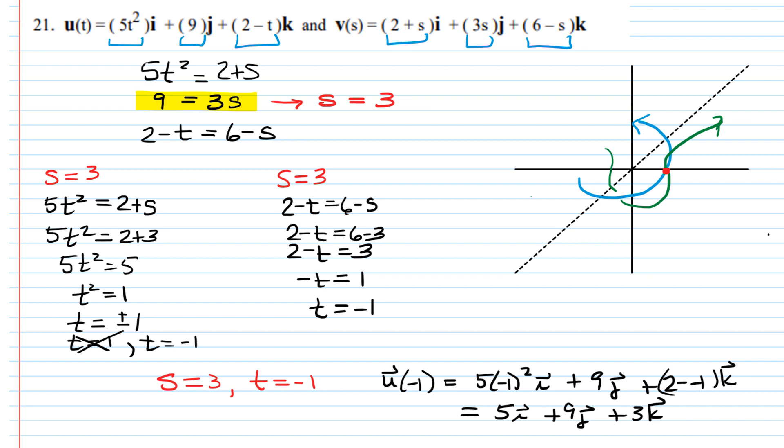And you'll notice if you plugged 3 into v, you would get exactly the same thing. So these guys are meeting at the point, which is also the tip of a vector, 5, 9, 3.